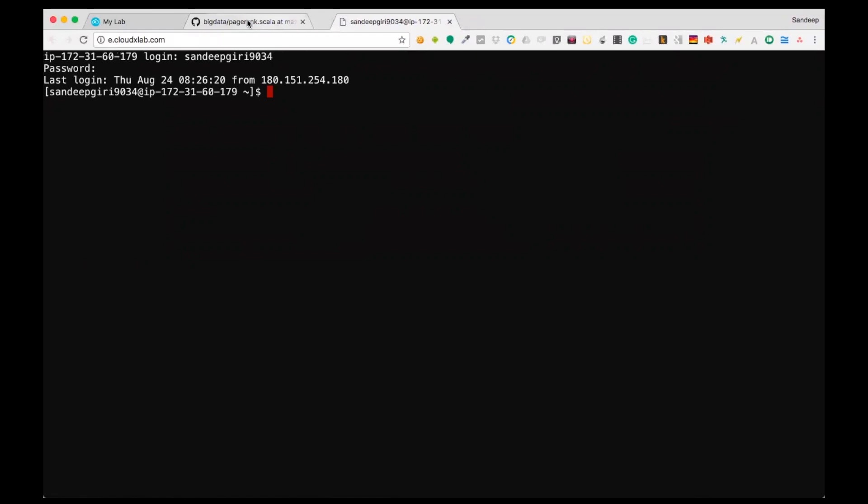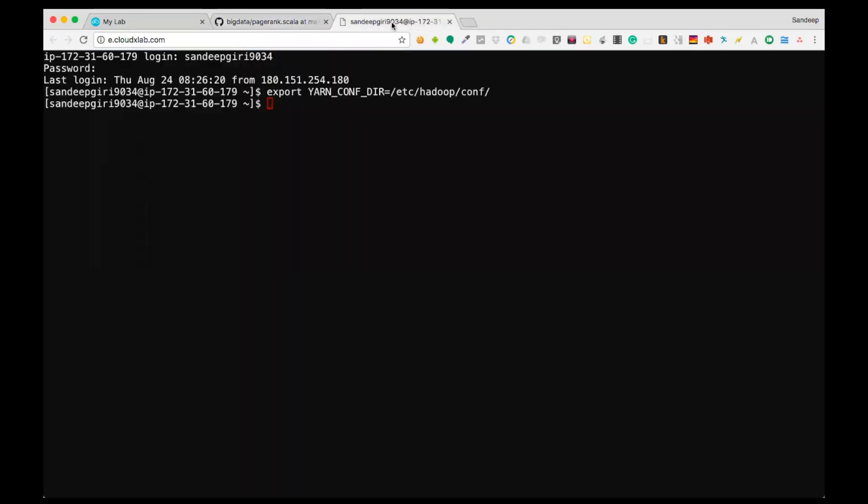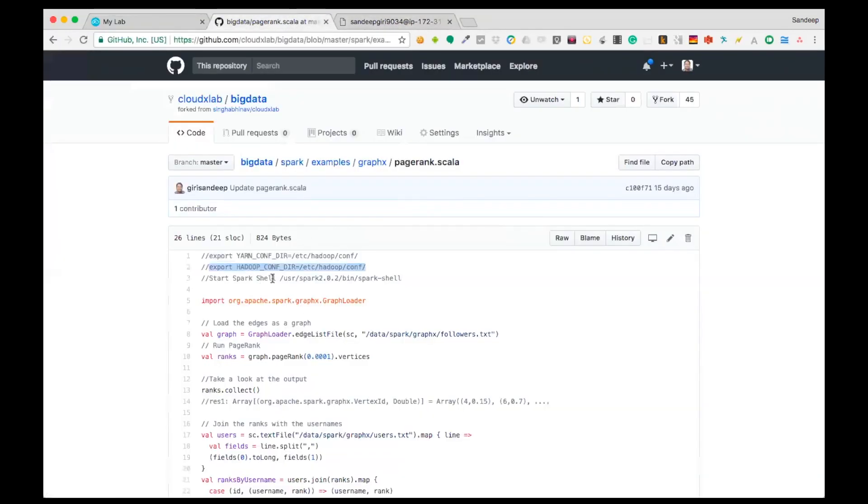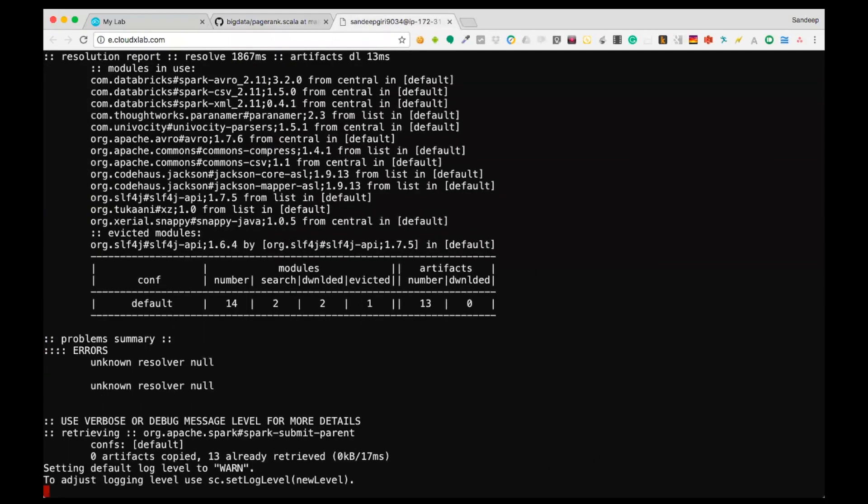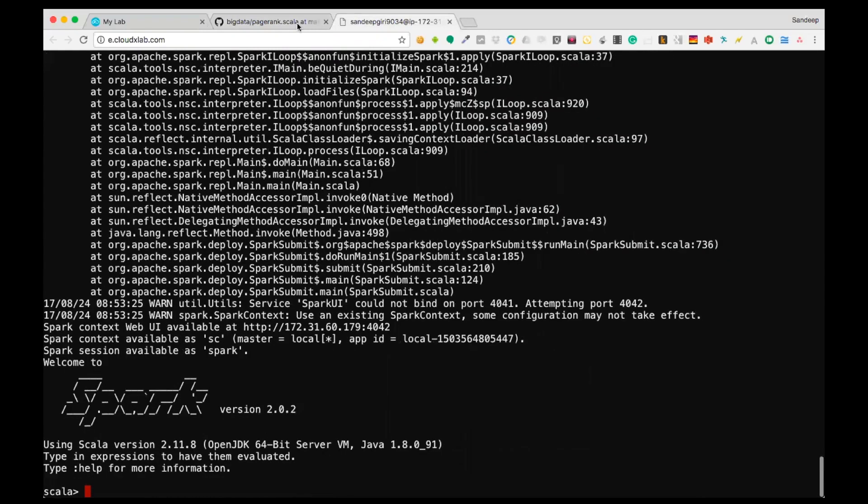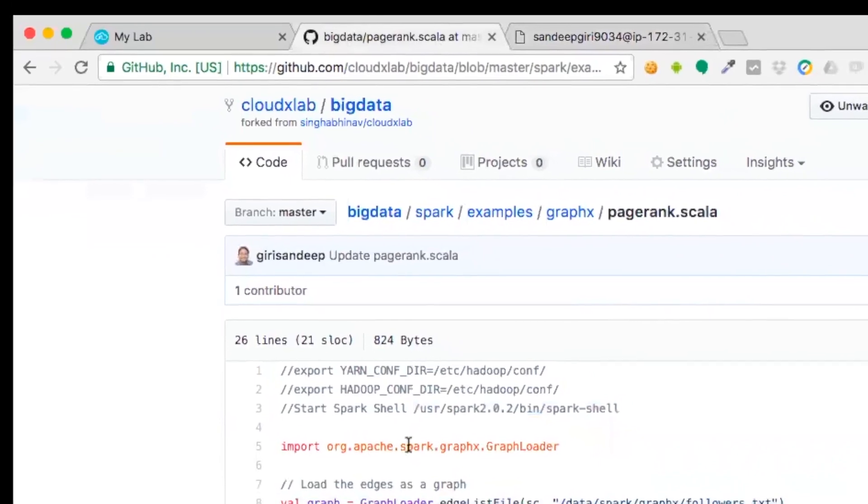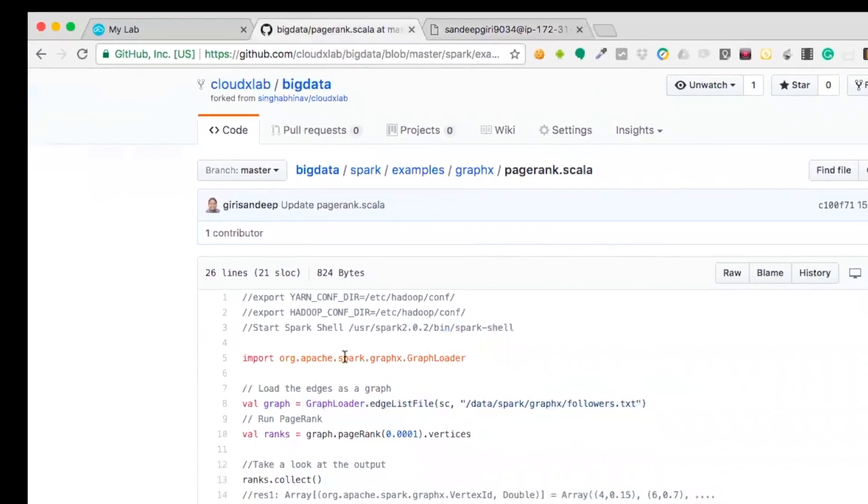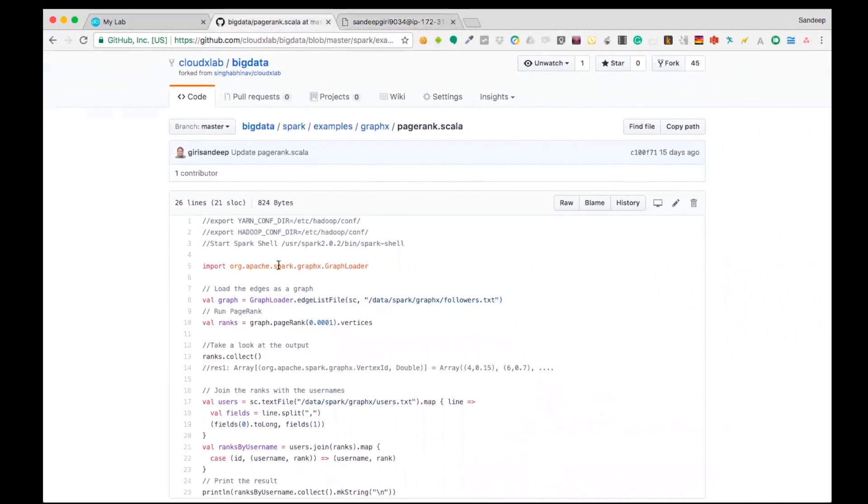Now, let's start Spark Shell. We would need to export the HADOOP_CONF_DIR and YARN_CONF_DIR environment variables. These variables should be pointing to the conf directory of your Hadoop installation. Now, launch the newer version of Spark Shell using /usr/spark-2.0.2/bin/spark-shell. Wait for Scala prompt to appear. On the Scala prompt, we will be writing the code. This code is available in our GitHub repository inside spark/examples/graphx/pagerank.scala. The URL for this repository is also available below in the references.